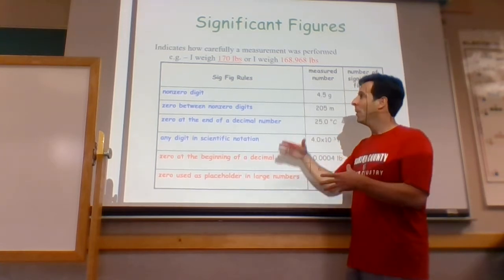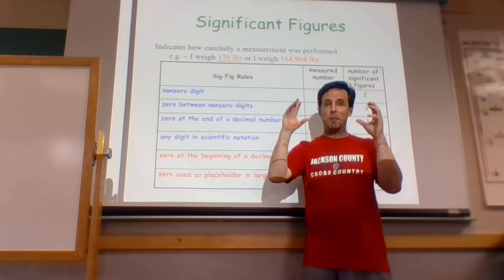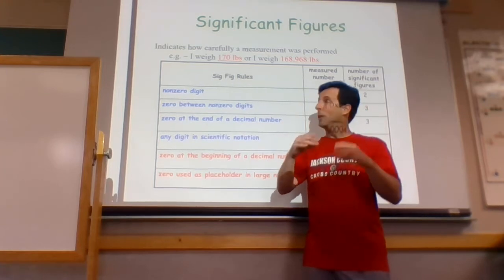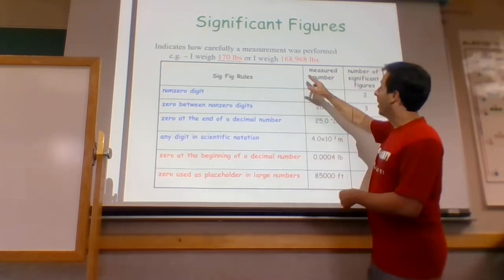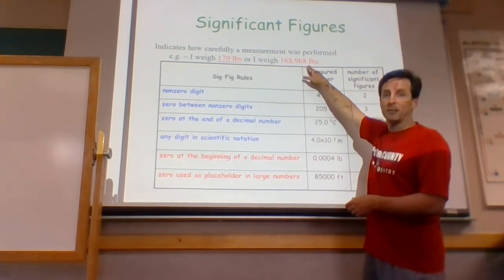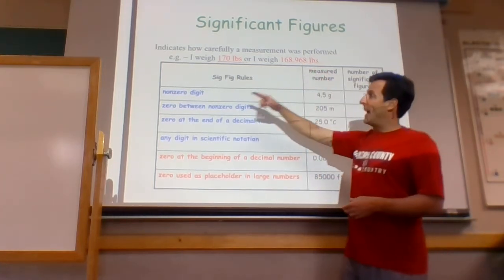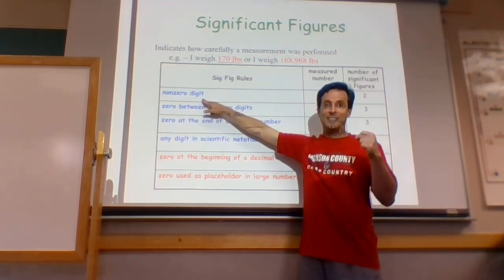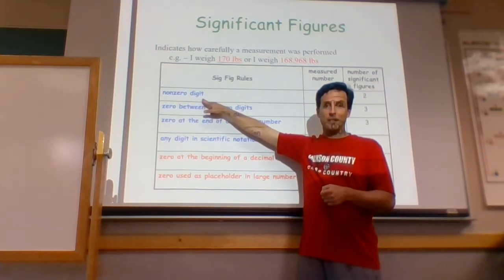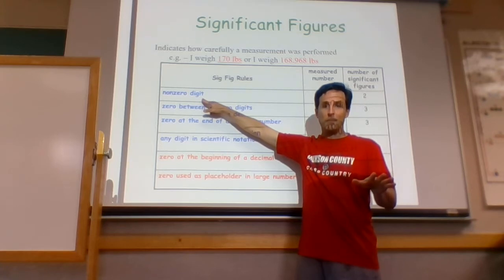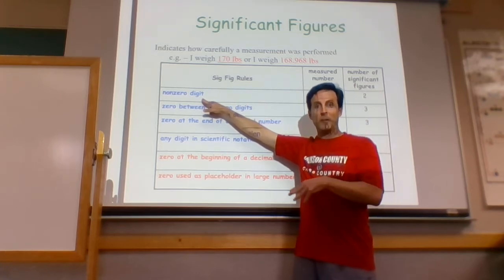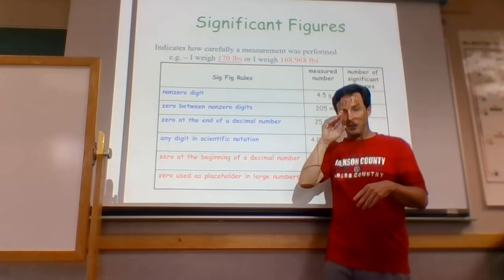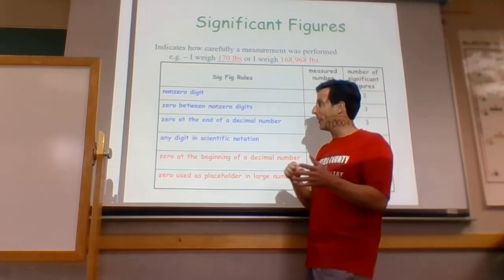If I write a number like 168.968, any non-zero digit that you write down is counted as a sig fig. It has to be — otherwise if you didn't mean to write it down, you shouldn't have written it down. You've got to be careful about that.